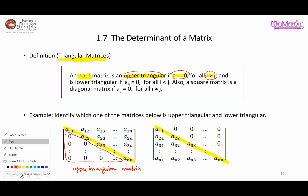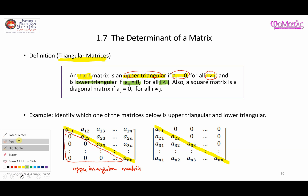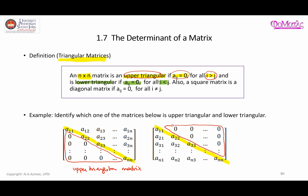Now the lower triangular matrix is similarly defined but in the opposite way: a_ij equals zero for all i less than j. This means the area above the main diagonal — where i is less than j — must all be zero. Below and on the main diagonal, you can have any combination of values.